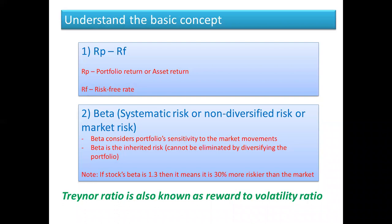The second box that you see shows beta. Another name for beta is systematic risk, non-diversified risk, or market risk. Beta tells you how sensitive your portfolio is to the market movements. This is also known as inherited risk — the risk that cannot be eliminated by diversifying the portfolio.